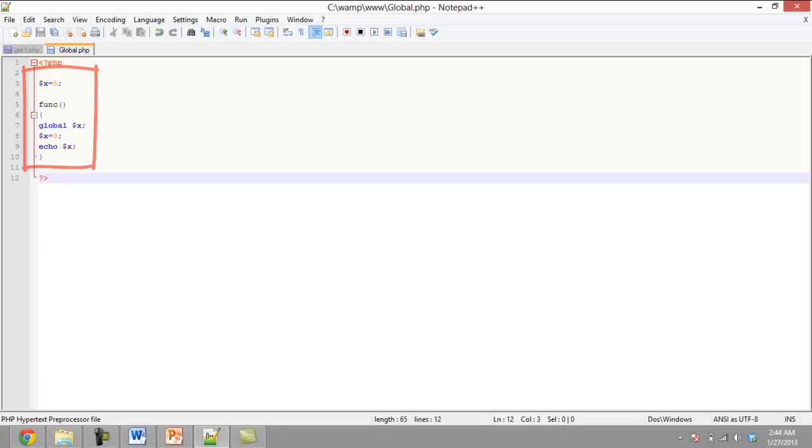Global variables can be used anywhere inside the PHP document, but cannot be used directly inside of functions and must be used with the global keyword or through the global array. PHP automatically stores all global variables inside the global array.